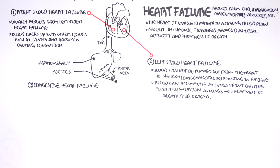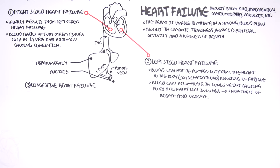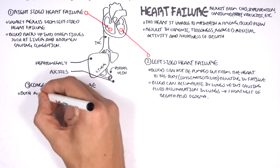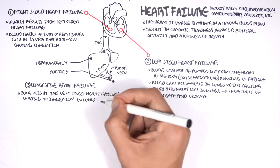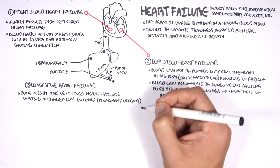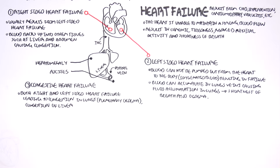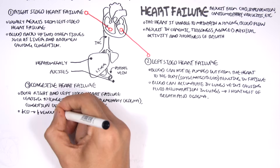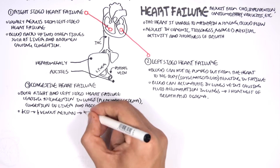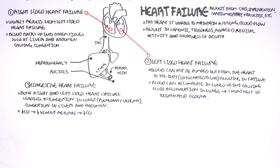The third type of heart failure is congestive heart failure, which involves both right and left-sided heart failures, leading to congestion in the lungs, pulmonary edema, and congestion of the liver and abdominal area. We have a decreased cardiac output, like in all heart failures, which leads to a decrease in venous return to the heart, resulting in decreased stroke volume and cardiac output again. The cycle continues if the underlying problem is not solved.